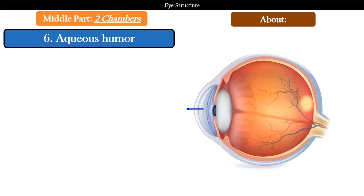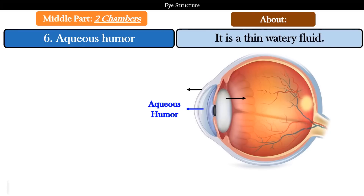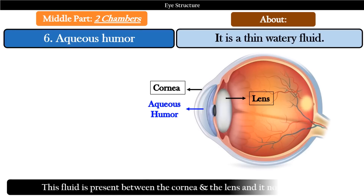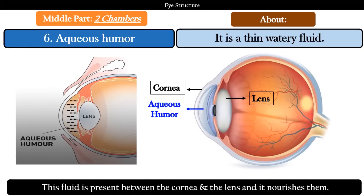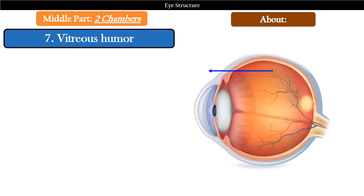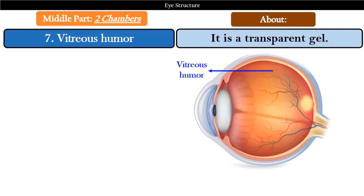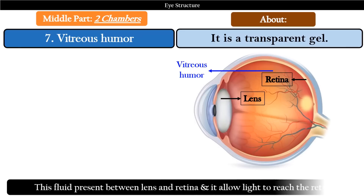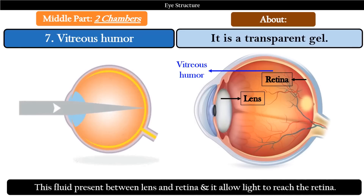The middle part of the eye also has two chambers. The first one is aqueous humor — it is a thin, watery fluid present between the cornea and the lens, and it nourishes them. The second chamber is known as vitreous humor. It is a transparent gel-like fluid present between the lens and retina, and it allows light to reach the retina.